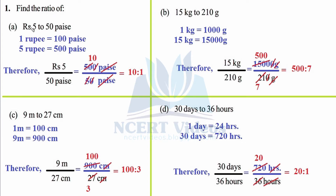Writing the ratio as a fraction: rupees 5 divided by 50 paise. Since 5 rupees equals 500 paise, we write 500 paise divided by 50 paise. The units cancel out — ratios are unitless. Simplifying: 500 divided by 50 gives 10 to 1. This means rupees 5 consists of 10 times 50 paise. That is the meaning of a ratio — it helps us compare quantities or describe one quantity in terms of another.